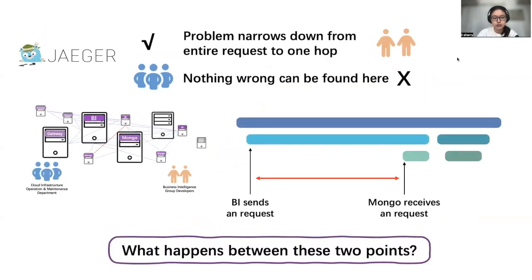So, what will happen with current tracing tools deployed, such as Jaeger? The BI group would happily show their evidence to cloud operators. Both BI and Mongo components invoke Jaeger APIs at their boundaries. We can clearly see that in some traces, there is an extremely long gap between when BI starts to call and when Mongo receives the call. However, no matter how cloud operators test the communication between these two components, they find nothing wrong. With the help of tracing, the problem successfully narrows down to one hop, but it stalls again and clients are still suffering. Let's pause here and think — what really happens during this long period of time? Actually, nobody knows for sure.